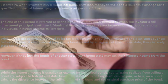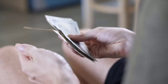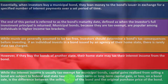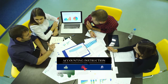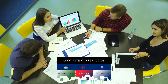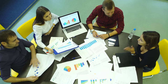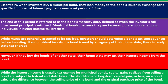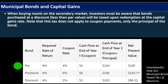While interest income is usually tax-exempt from municipal bonds, capital gains realized from selling a bond are subject to federal and state taxes. If we buy a bond and sell it at a higher price before maturity, that creates a capital gain — not just rental income from interest, but a gain on the sale which triggers a taxable event. The short-term or long-term capital gain or loss on the bond sale is the difference between the selling price and the original purchase price of the bond.